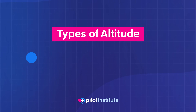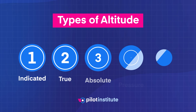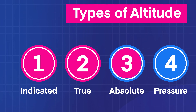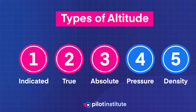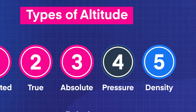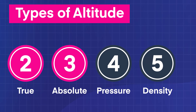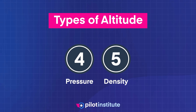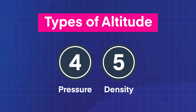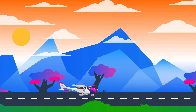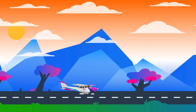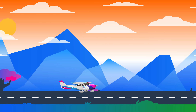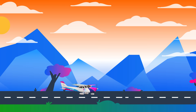As pilots, we learn five different types of altitudes: indicated, true, absolute altitudes — those are pretty straightforward. But pressure and density altitude, those tend to trip people up. Because, well, they're a bit more abstract. And if you don't understand what they mean, you could end up out of runway, out of performance, or just plain out of luck.